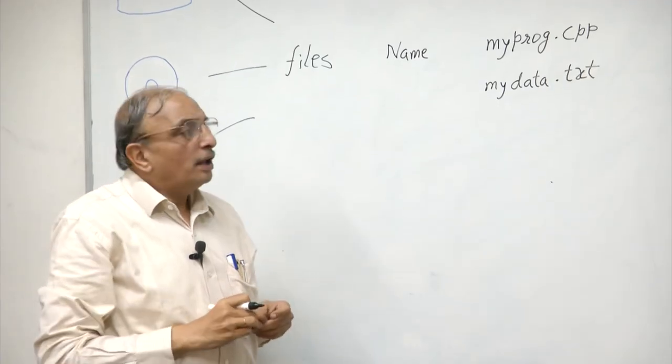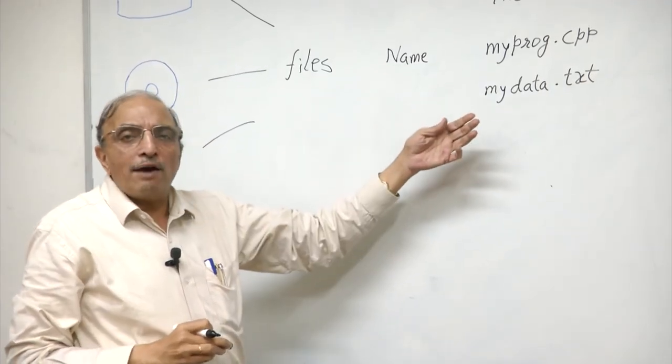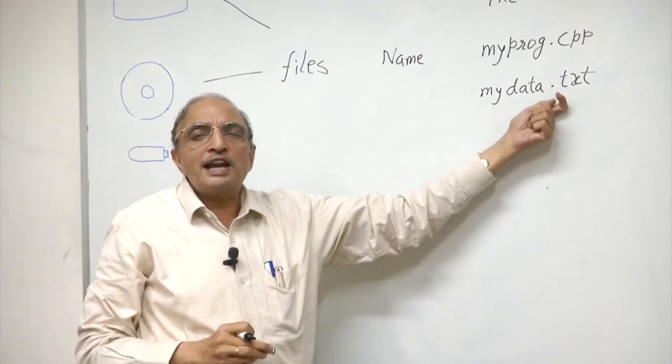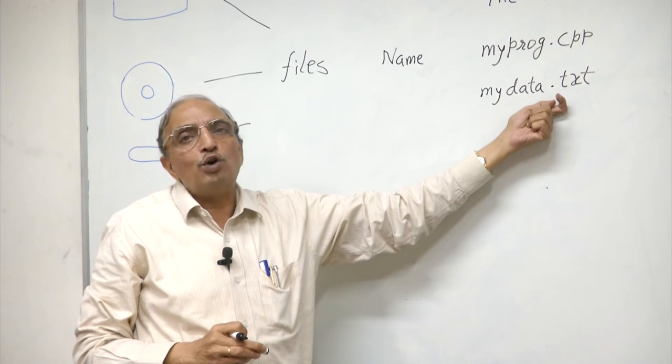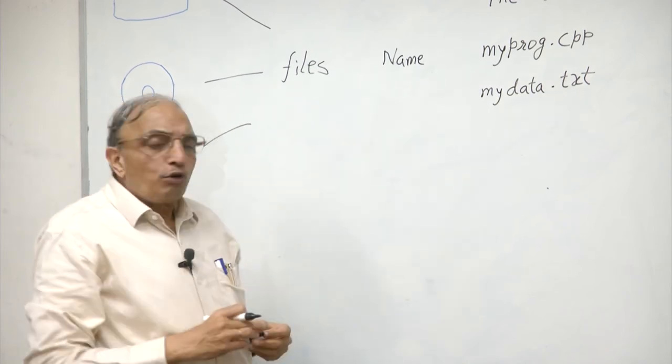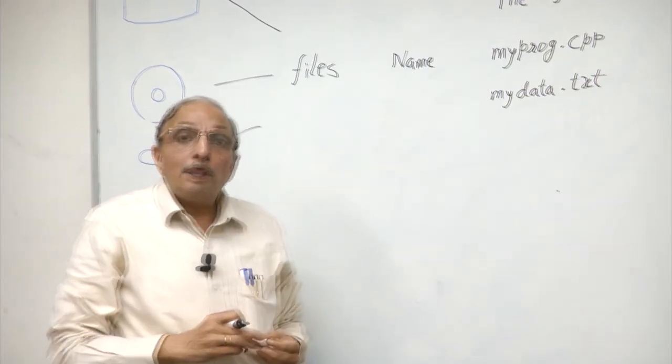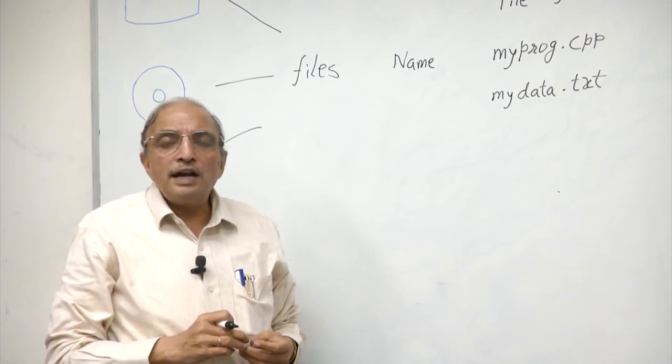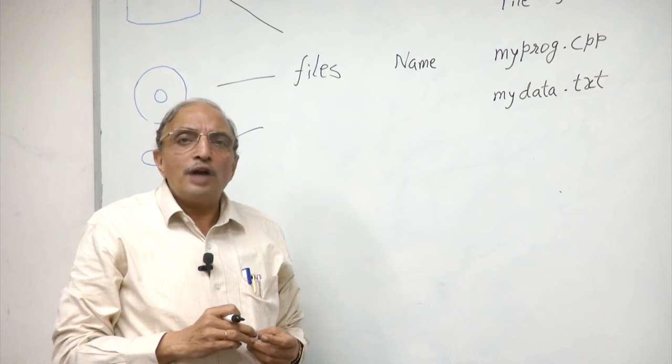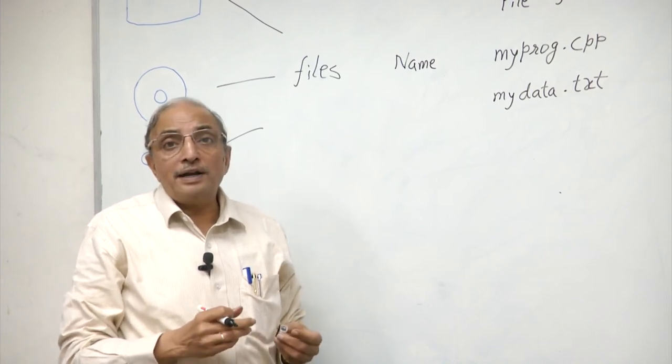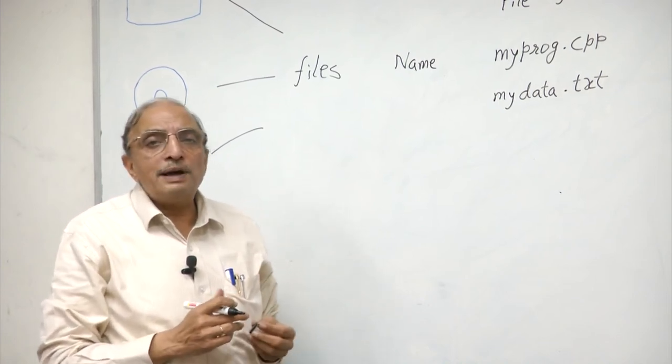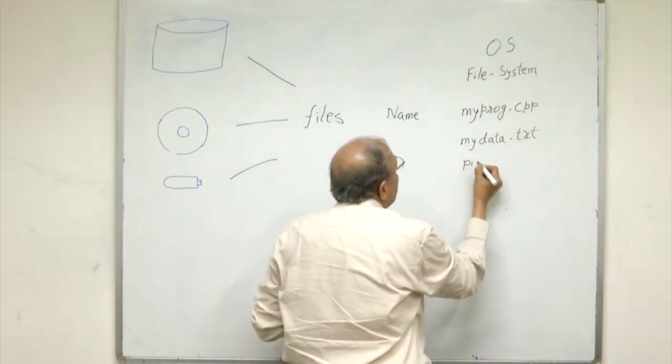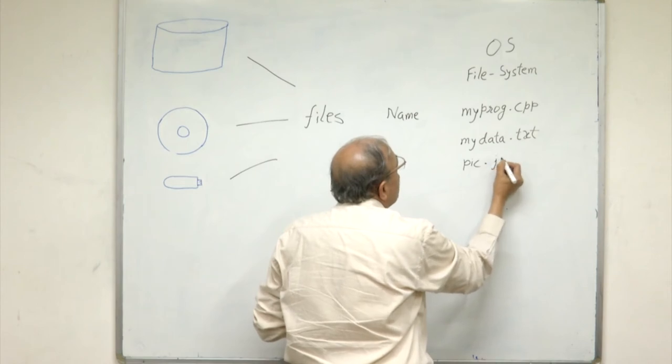Please note that the names have a name proper and an extension which often describes the type of data that is stored inside the file. There could be special types of files. We know, for example, that digital images can be stored in files, and these digital images could have their own format in which data is stored. For example, a JPEG file could be stored as pic.jpg.